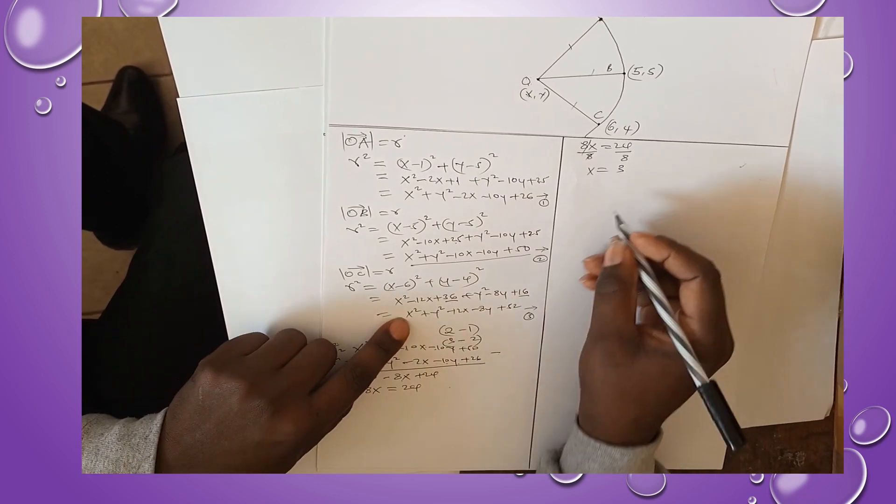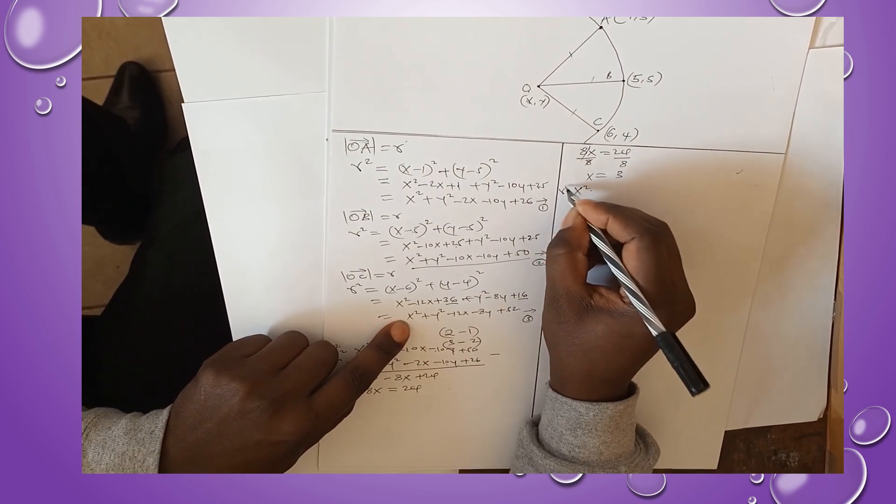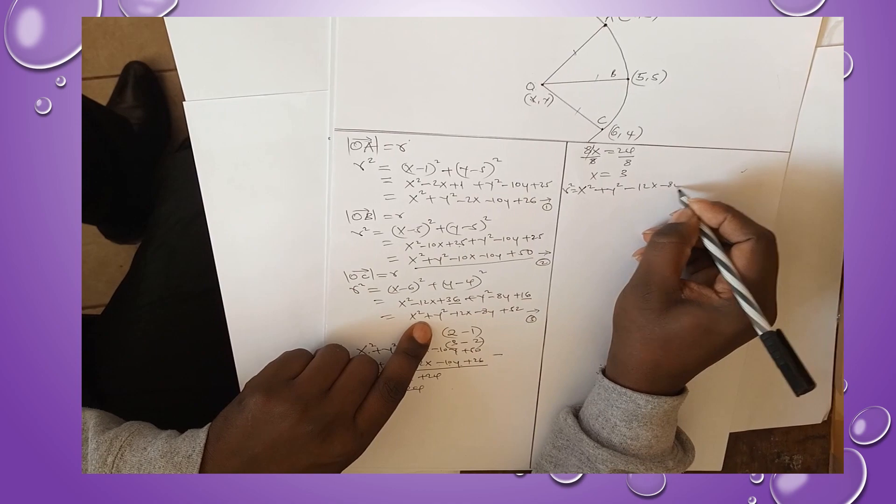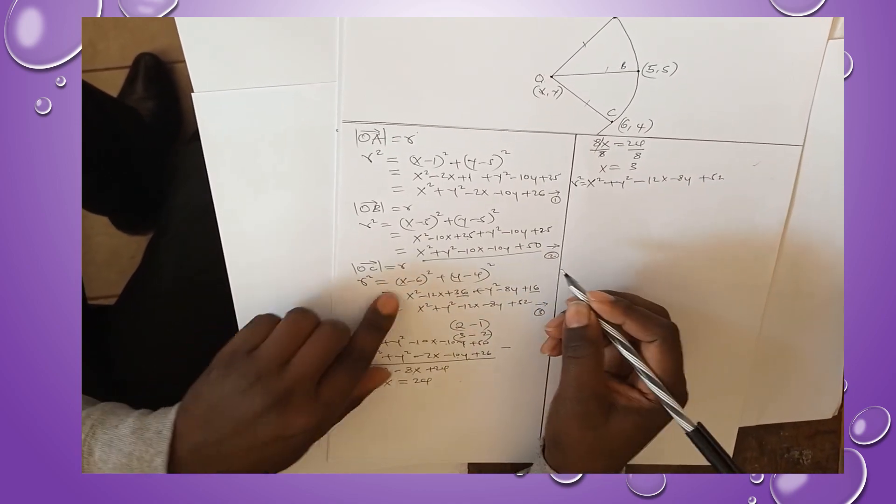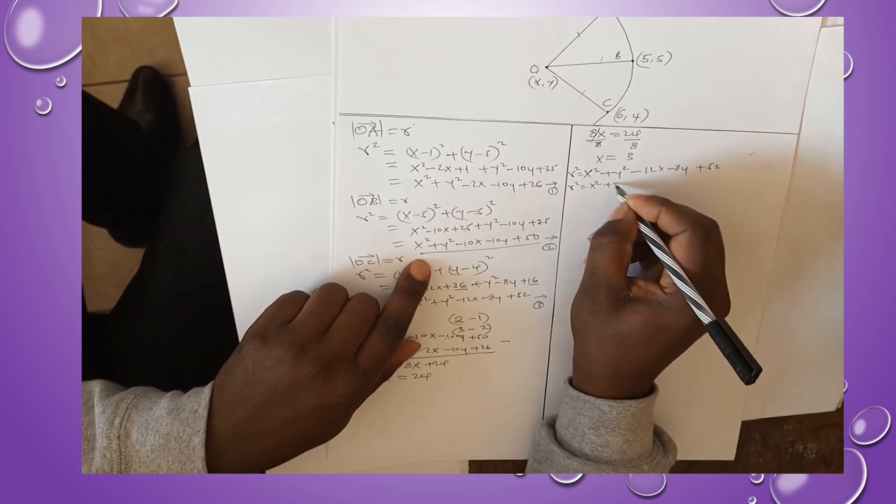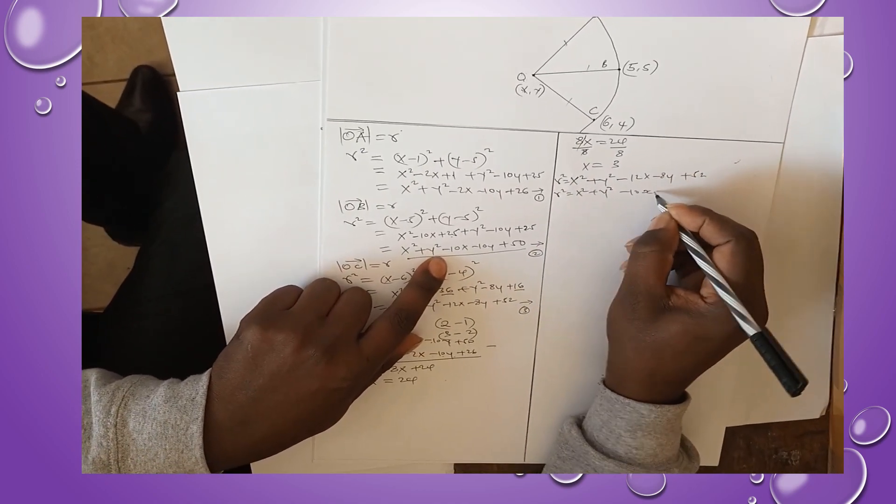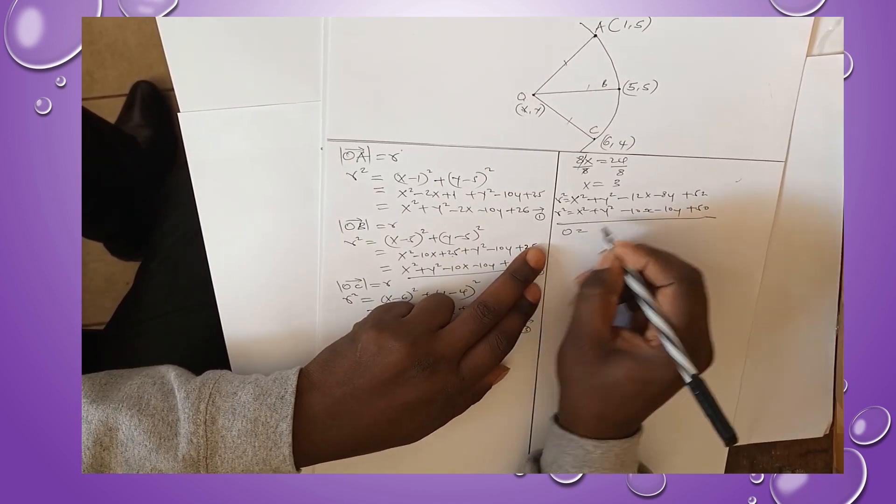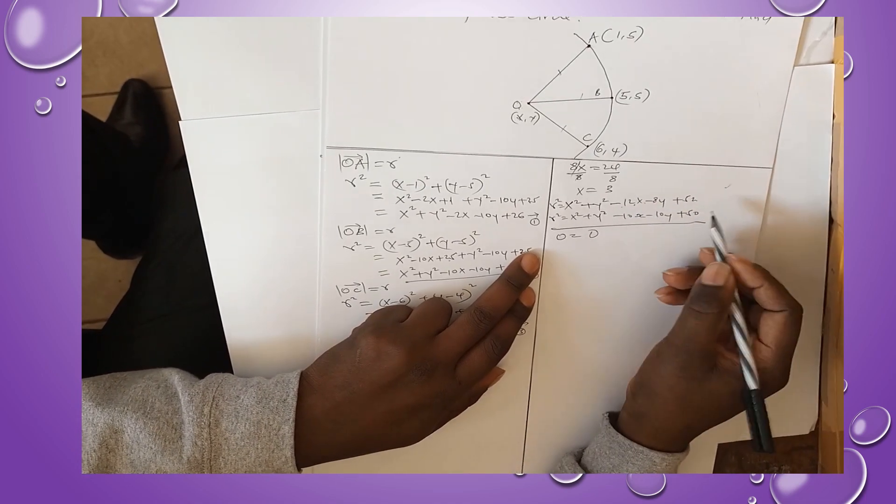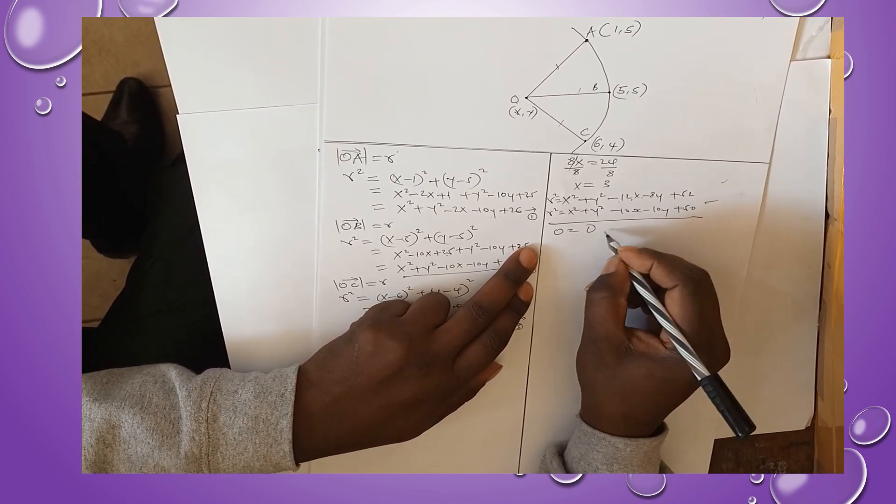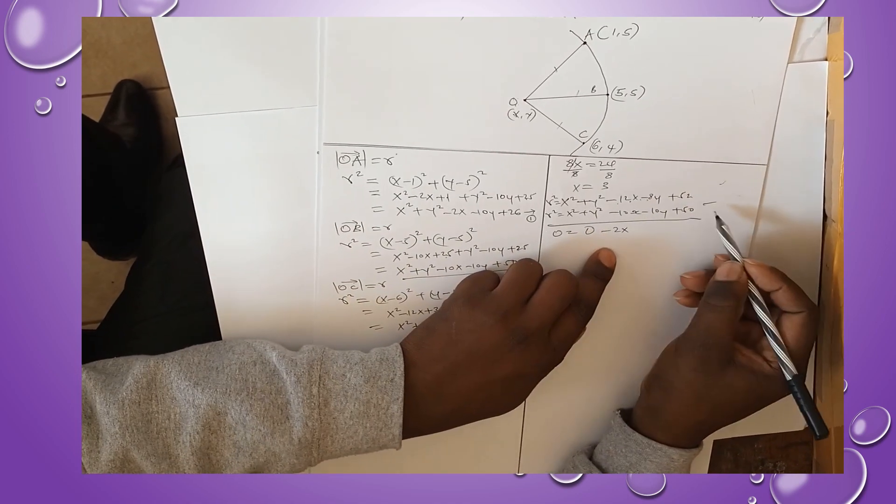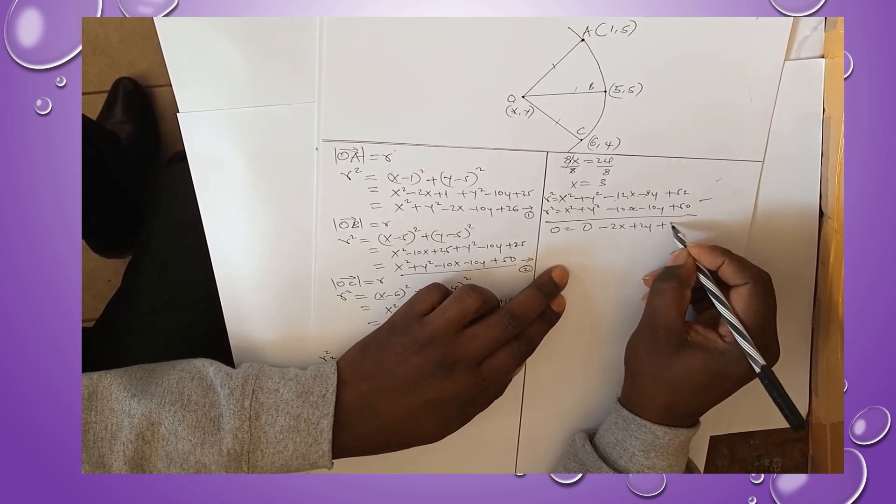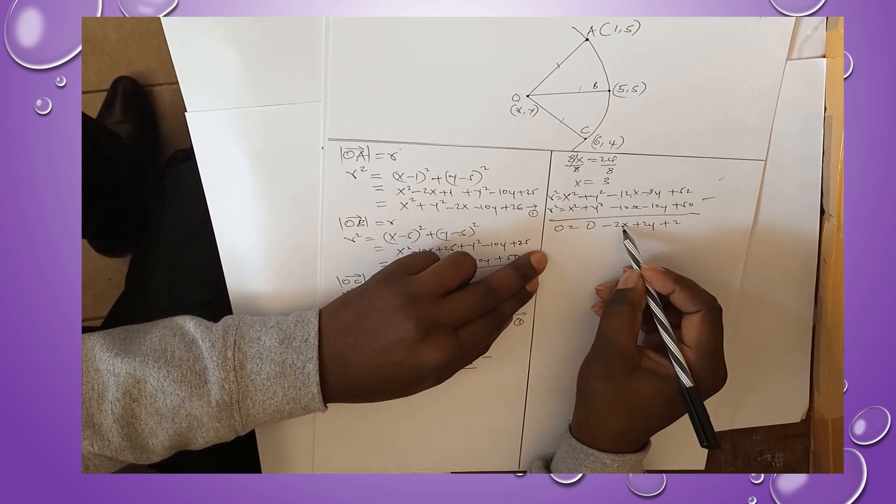Let's go to the third equation. We have r² = x² + y² - 12x - 8y + 52. Our second equation is r² = x² + y² - 10x - 10y + 50. If we subtract, we will get 0 = -2x + 2y + 2.